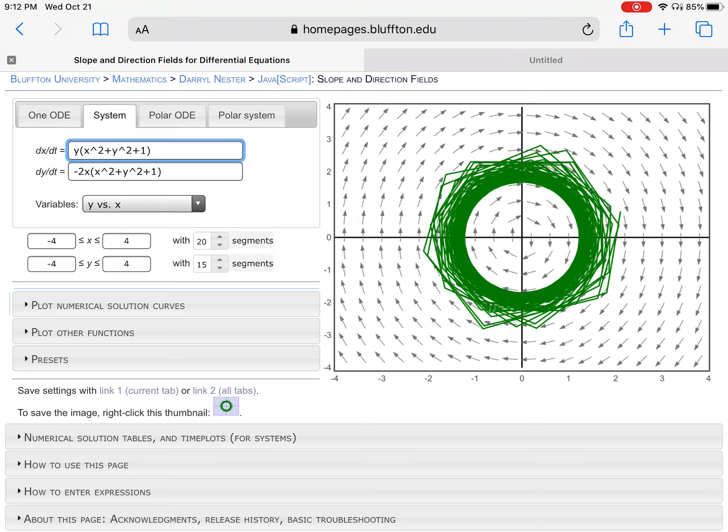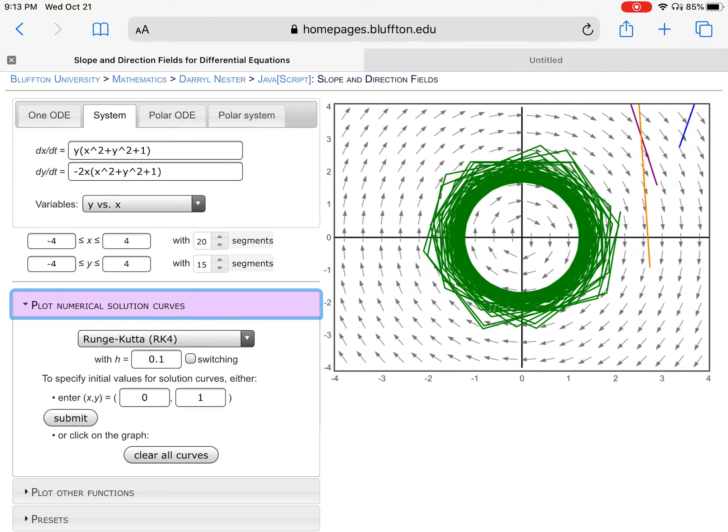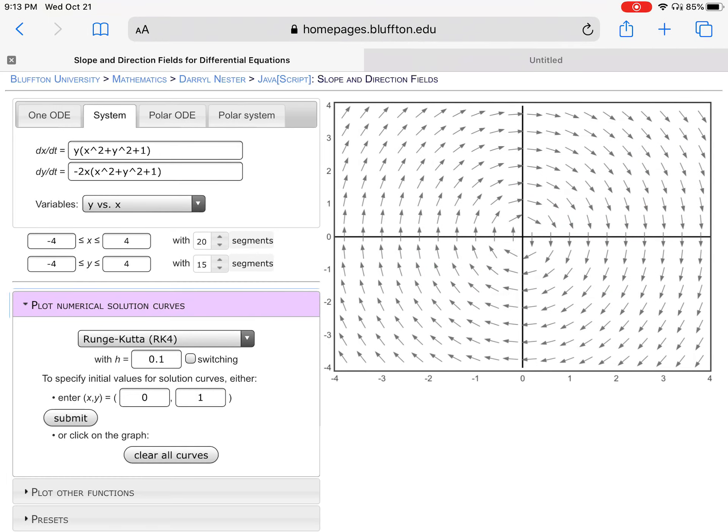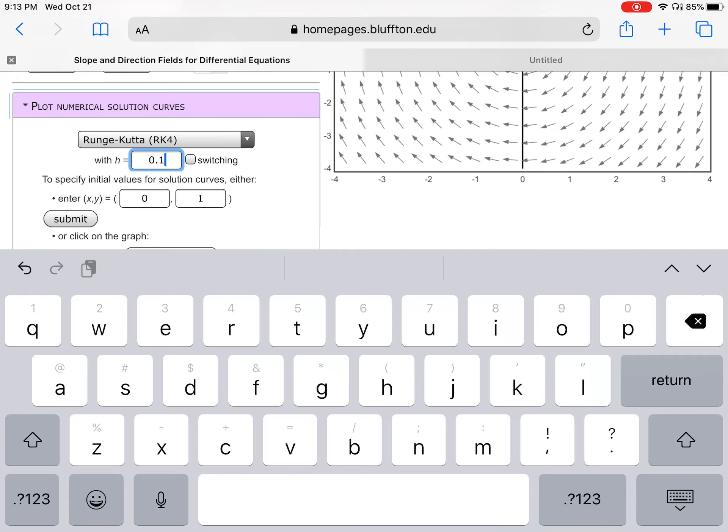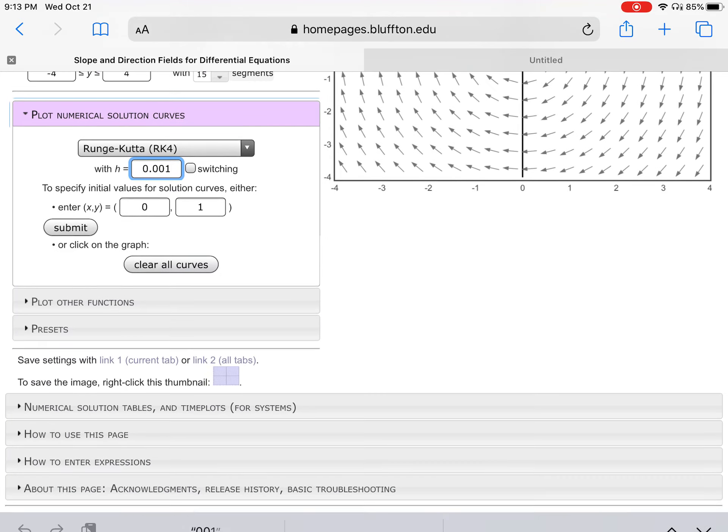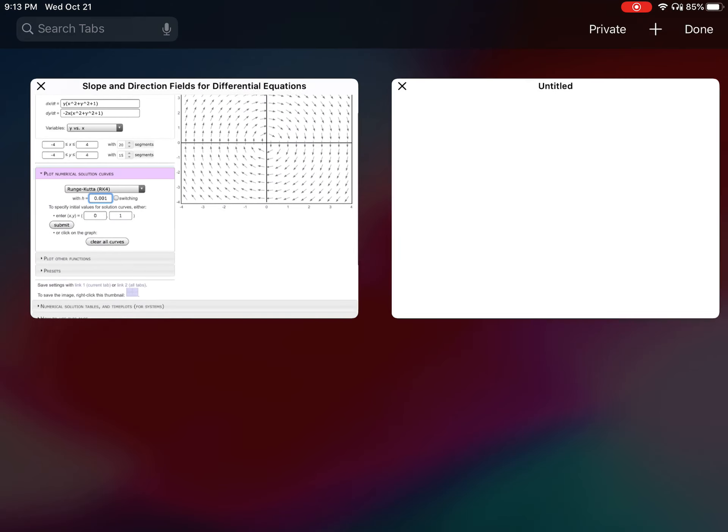And it really doesn't help if I tap anywhere else. I try here now, it's not even an ellipse, it's just a random blue line somewhere. So even though Runge-Kutta 4 tends to be a very accurate solver, it's not helping in this case. One thing you might try is making the h value here smaller. So we can try making this 0.001.